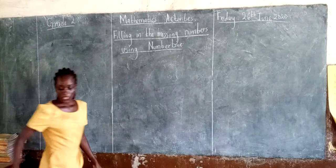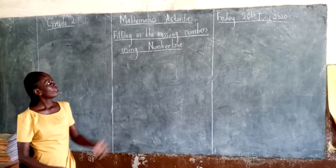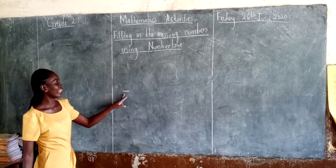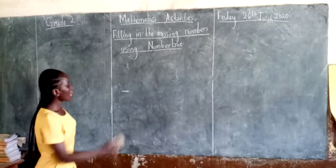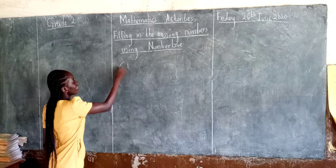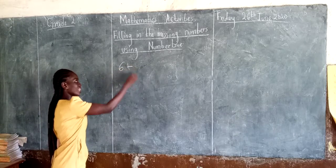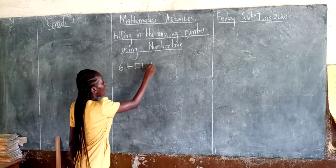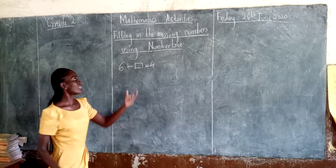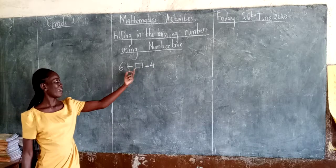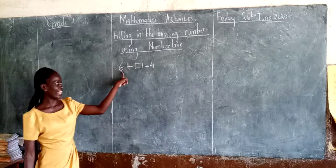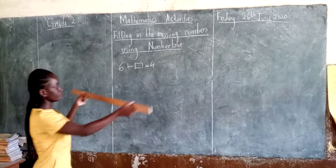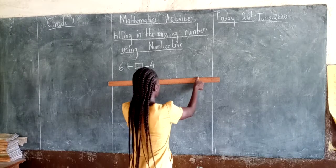Today we want to use the number line in questions involving subtraction, or taking away. So our first example: 6 minus dash is equal to 4. We want to find the missing number — a number that, if you take it away from six, we will remain with four. So we start by drawing our number line.